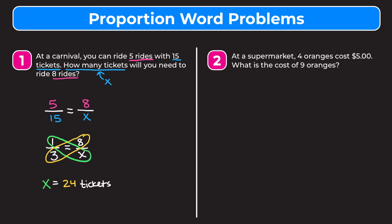Example two: at a supermarket, four oranges cost five dollars — what is the cost of nine oranges? We set up two equivalent ratios of oranges to price. From the first sentence, four oranges cost five dollars, giving us four over five. We set this equal to nine over x, where x is the cost of nine oranges.